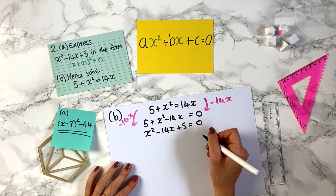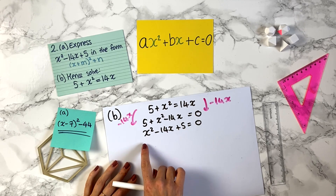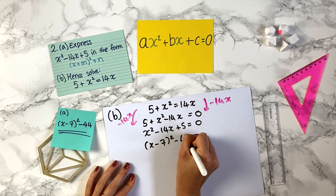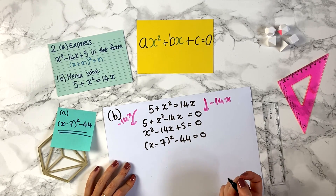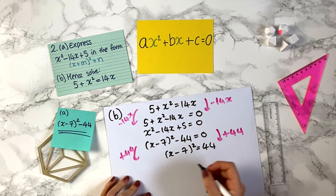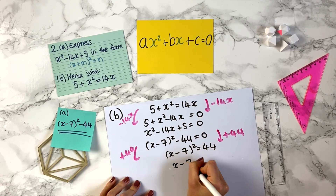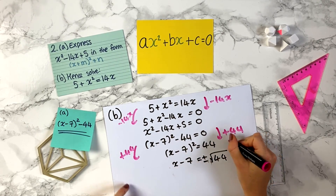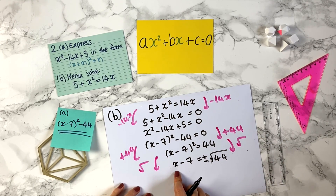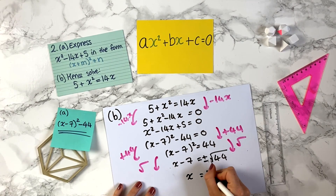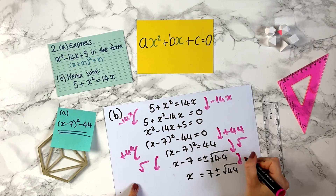Using the same trick as the first question, we use our hard work from part a. We know that when you complete the square, x squared minus 14x plus 5 is x minus 7 all squared minus 44. So the left-hand side equals x minus 7 all squared minus 44, and that equals 0. We can add 44 to both sides to get x minus 7 all squared equals 44. Then we take the square root of both sides — on the left that gives us x minus 7, and on the right we get plus or minus the square root of 44. Then if we add 7 to both sides, we get x equals 7 plus or minus the square root of 44.